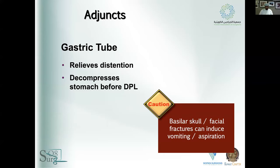Another adjunct we tend to forget is the gastric tube. It relieves distension and decompresses the stomach before DPL — that is a must. However, be careful not to insert it through the nose if you suspect a basilar or facial skull fracture, as you don't want the tube in the brain. Be careful with semi-conscious patients as it may cause vomiting and aspiration. If your patient gets an endotracheal tube, you should automatically follow it with an oral gastric tube.